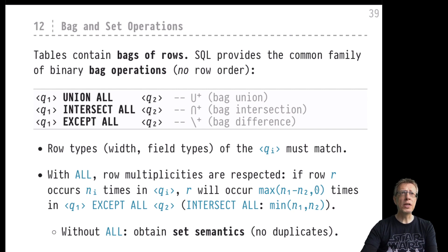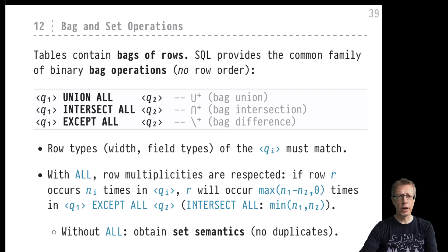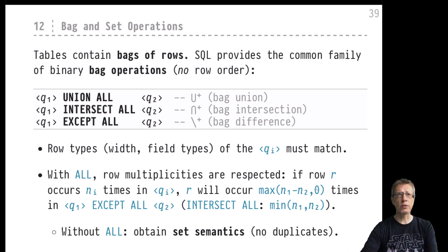These operations are commonly known as the union, the intersect, and the except (minus) operation on bags. In SQL syntax these are written as UNION ALL, INTERSECT ALL, and EXCEPT ALL between two queries Q1 and Q2. These Q1 and Q2 are entire SELECT-FROM-WHERE blocks, so UNION, INTERSECT, and EXCEPT operations occur at the top syntactic level.